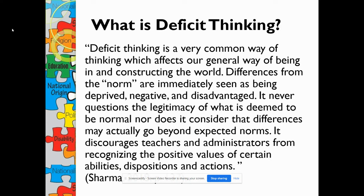So in thinking about deficit thinking, some of us have had conversations about that. Some of you will be having those conversations over the spring and the summer, and some of you have been having this conversation in other areas, in research and in other courses, fundamentals, and some of your content area. What exactly is deficit thinking? As quoted by Sharma 2018, it's a very common way of thinking which affects our general way of being in and constructing the world around us. We have to remember that our construction and our idea of the world, people, stories, and places comes from how we were brought up, in the spaces we grew up, how we understood those conversations. Differences from the norm are immediately seen as being deprived, negative, and disadvantaged.